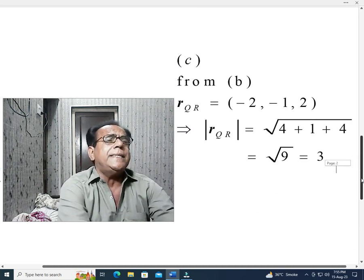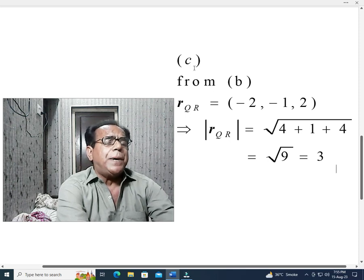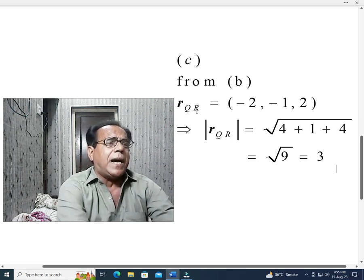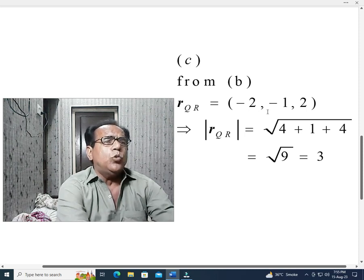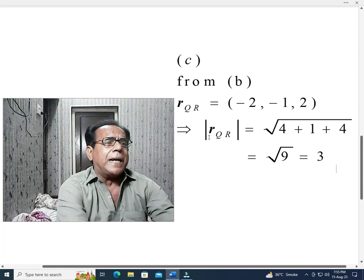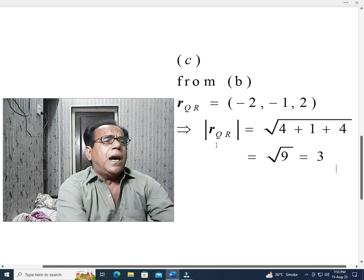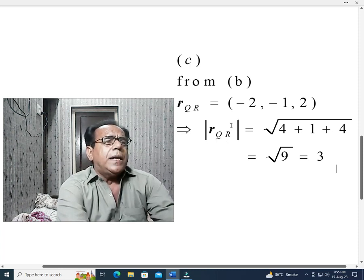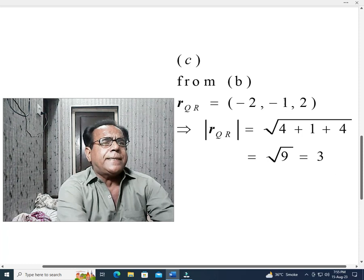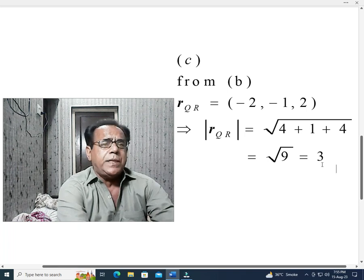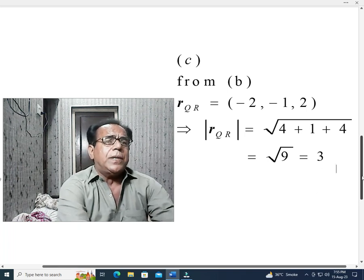So part C, from part B, we have already calculated vector QR equal to this, and hence its magnitude, that is |r_QR| modulus value becomes equal to square root of ((-2)² + (-1)² + 2²), whole under root, and it becomes equal to square root of 9, and this becomes equal to 3. This is the end of our problem.